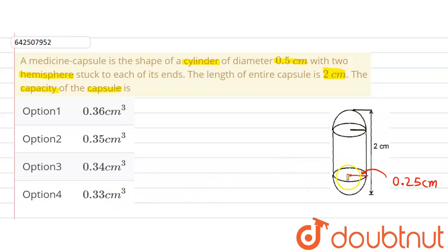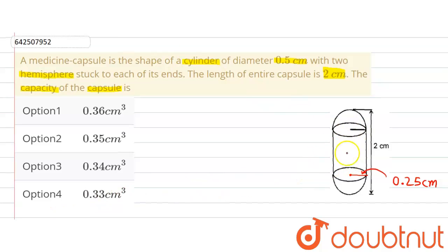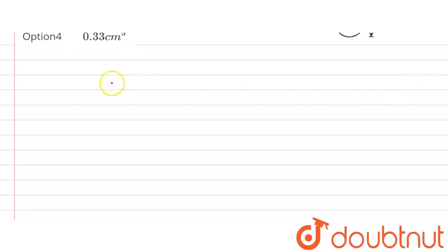Now if we observe this figure, then radius of the cylinder will also be the radius of this hemisphere. Now to find out the volume of this capsule, what we are going to do is, as it can be seen, there is a cylindrical part and there are two hemispherical parts of the capsule.